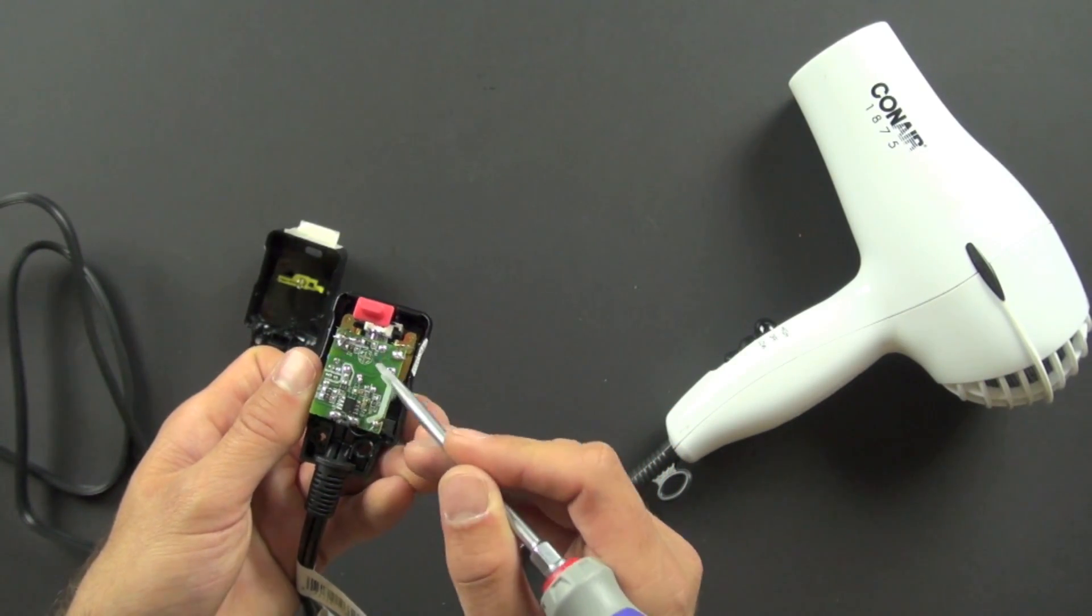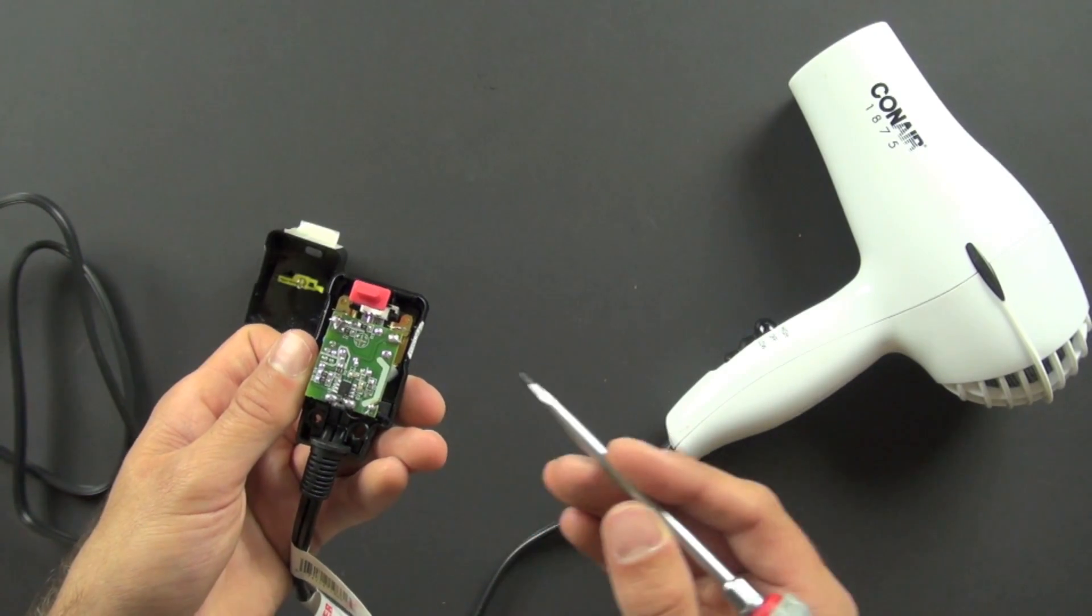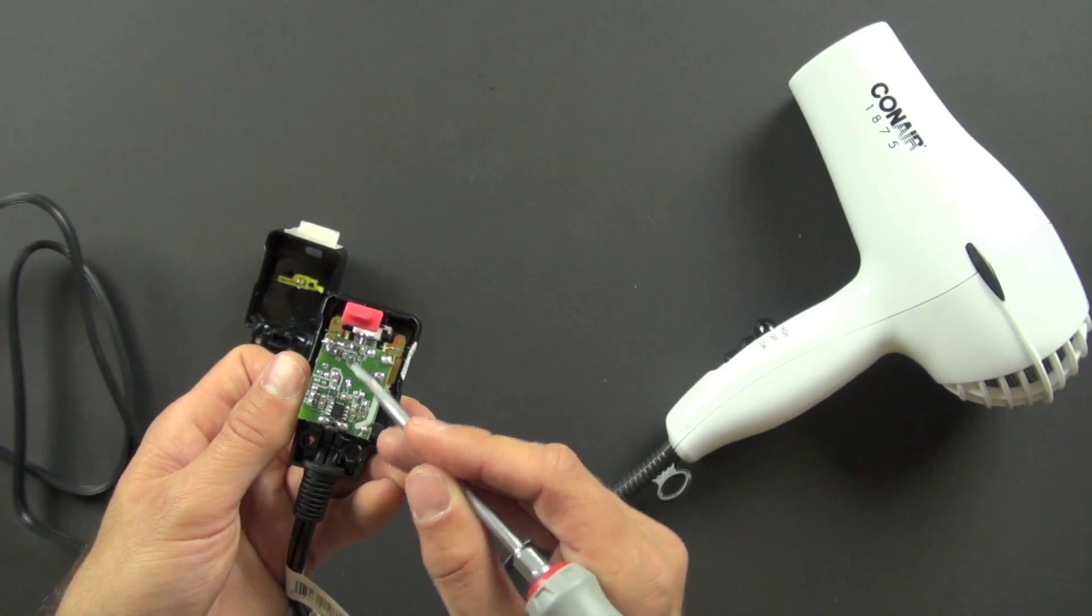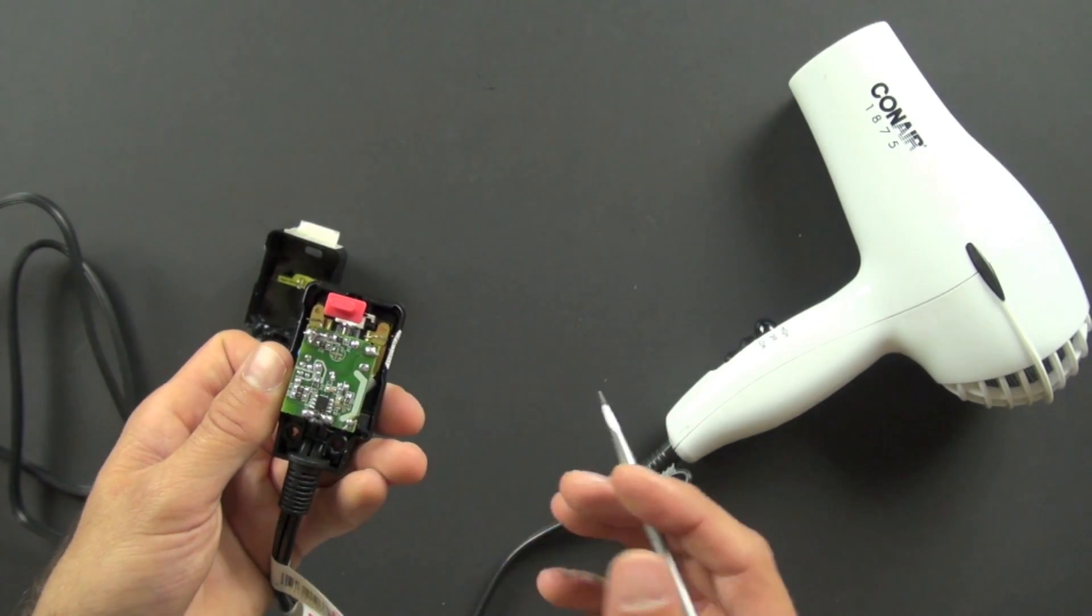So there's places where there is no copper, and there's places where there is. And those places where the copper exists are called traces, and they function like little tiny wires. They're super flat and compact and allow you to get a lot of stuff in a very small space, which is why we use a little printed circuit board like this.